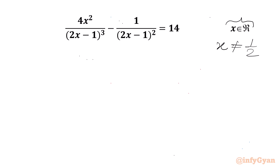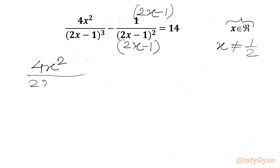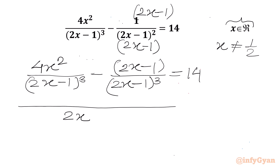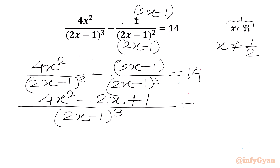I will multiply with (2x - 1) in the numerator to make our denominators the same. I will write the equation as 4x² over (2x - 1)³ minus (2x - 1) over (2x - 1)³ equal to 14. Taking the LCM, we write (2x - 1)³ in the denominator, and in the numerator we have 4x² - (2x - 1), equal to 14.